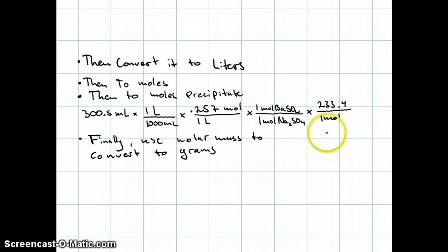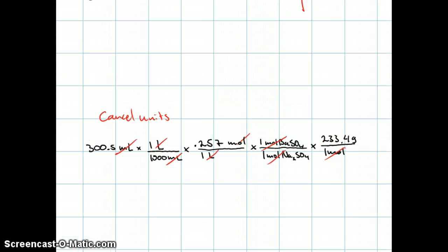Finally, we multiply everything by the molar mass to convert to grams. Don't forget to cancel your units. The milliliters cancel, then the liters, then moles of sodium sulfate, then moles of barium sulfate. And we're left with an answer in grams.